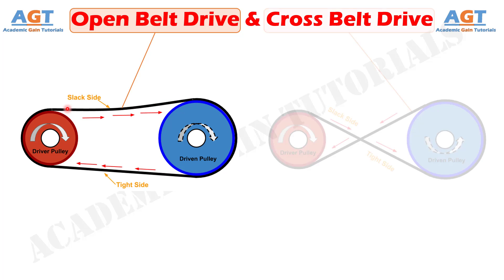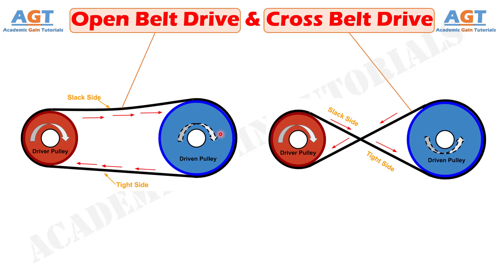Contrary to this, in crossed belt drive, the belt proceeds from the top of one pulley to the bottom of the other pulley and thus crosses itself in between the two pulleys. Here the driving shaft and driven shaft rotate in opposite directions.